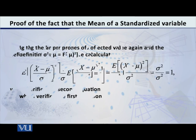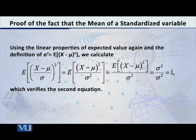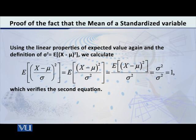Now let us focus on the second expression: the expected value of (x minus mu over sigma) whole square. This second expression is equal to the expected value of (x minus mu) whole square, over sigma square. Since sigma square is a constant, we can write our expression as the expected value of (x minus mu) whole square, divided by sigma square.